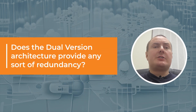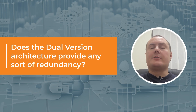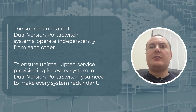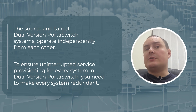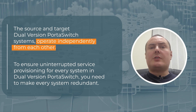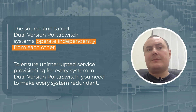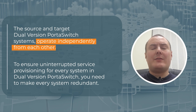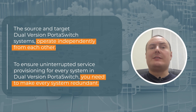Thus, the dual version architecture provides any sort of redundancy. The source and target dual version PortoSwitch systems, meaning your current production system and the system you are migrating to, operate independently from each other. So, when either system is down or unavailable, those services do not fail over to the other system. To ensure uninterrupted service provisioning for every system in dual version PortoSwitch, you need to make every system redundant.